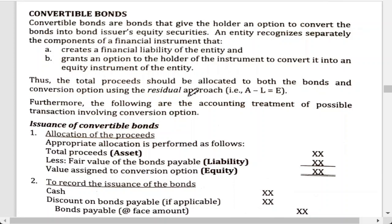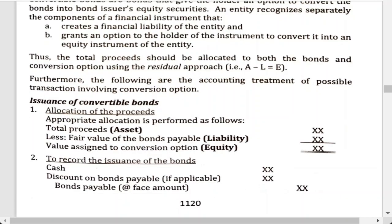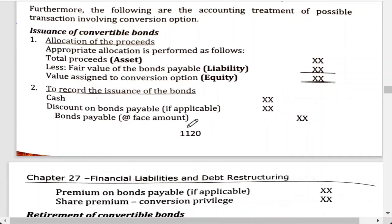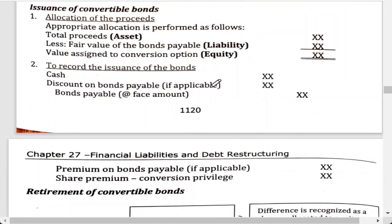The total proceeds should be allocated to both the bonds and the conversion option using the residual approach. The accounting treatment for transactions involving the conversion option works as follows: first, identify the proceeds received — this is our asset. Then deduct the fair value of the bonds payable — this is the liability. The remaining amount after deducting the fair value of the bonds payable will be assigned to the conversion option, which represents equity.